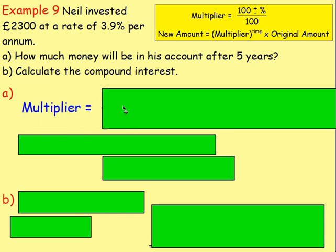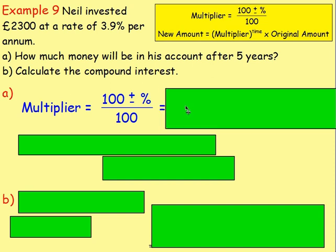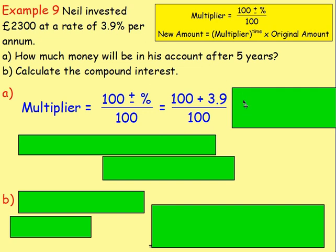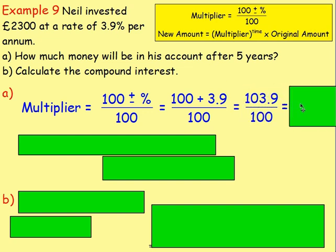For our multiplier, once again we start at 100, add or take away our percentage, and then divide by 100. We start at 100, add on the 3.9, and then divide by 100. That gives you 103.9. Divide that by 100 — moving the decimal back two places — and you will get 1.039.